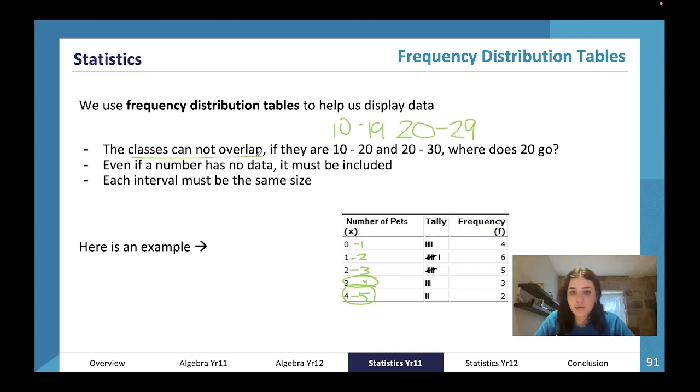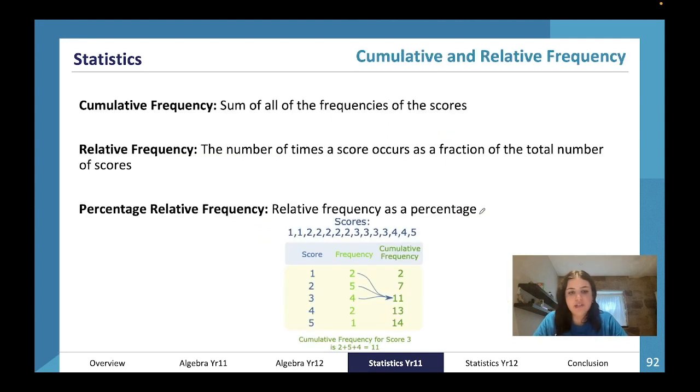Even if a number has no data, if it's included in the set it must be included in the table. So if people were surveyed about whether they had zero to six pets and no one has six pets, you still have to include six with zero frequency. Each interval must also be the same size. This example shows the number of pets, a tally of how many people have that number of pets, and the frequency. We write the frequency based on the tally—it's not cumulative yet.